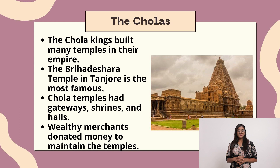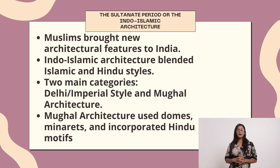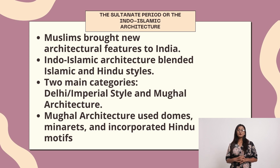The Sultanate period and Indo-Islamic architecture: Muslims brought new architectural features to India. Indo-Islamic architecture blended Islamic and Hindu styles. The two main categories are the Delhi or imperial style and Mughal architecture. Mughal architecture used domes and minarets and incorporated Hindu motifs.